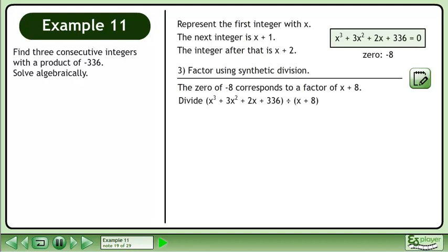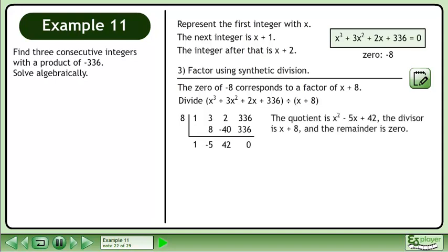Divide x³ + 3x² + 2x + 336 by x + 8. Set up and complete the synthetic division. The quotient is x² - 5x + 42, the divisor is x + 8, and the remainder is 0.